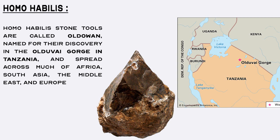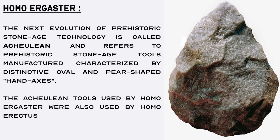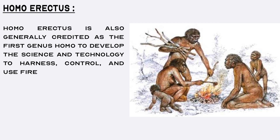From Homo habilis the handyman, to another archaic human ancestor named Homo ergaster, the working man, found in Africa dated to roughly 1.7 to 1.4 million years ago. Homo ergaster is named the working man because of their widespread use of more advanced stone tools than their predecessors. The next evolution of prehistoric stone age technology is called Acheulean, referring to prehistoric tools characterized by distinctive oval and pear-shaped hand axes, used by both Homo ergaster and Homo erectus 1.5 to 1.26 million years ago in the Afar region of Ethiopia. Homo erectus is also generally credited as the first genus Homo to develop the science and technology to harness, control, and use fire.